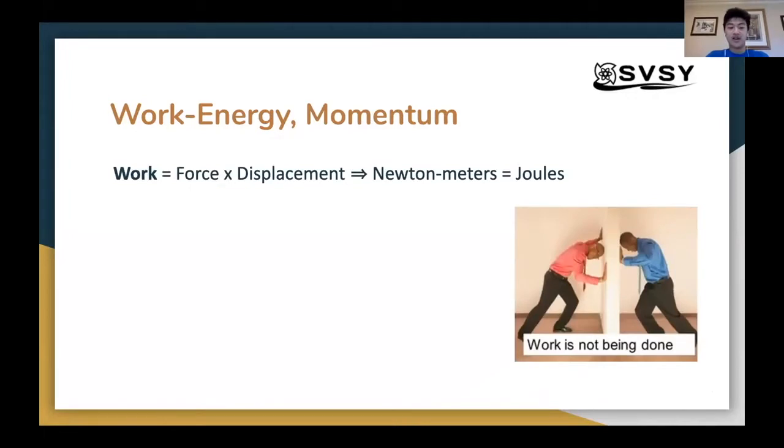Work is defined as force times displacement. For example, let's say you push a box with a force of 10 Newtons over a distance of 5 meters. The work that you would produce would be 10 Newtons times the displacement, which is 5 meters. So that would be 50 Newton meters or joules.